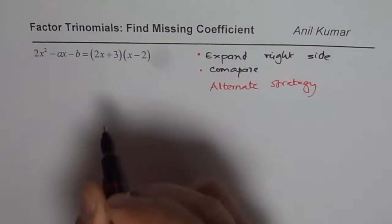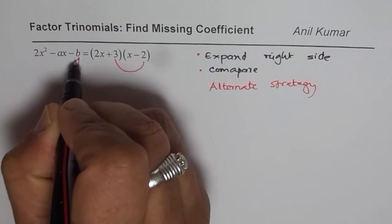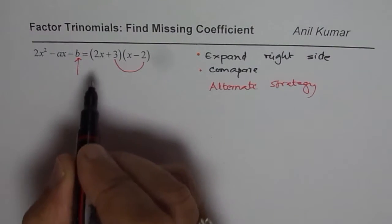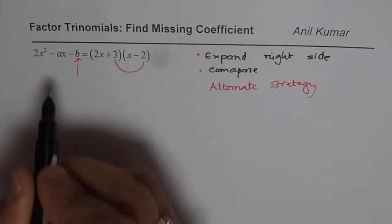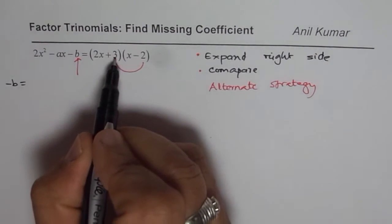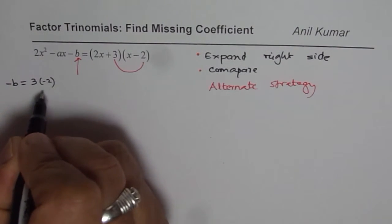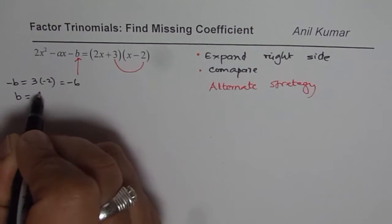If I multiply these two numbers, I get this number. That is what this alternate strategy is. We can write down answers directly without expanding. We'll say -b = 3 × (-2), which is -6. So b = 6.